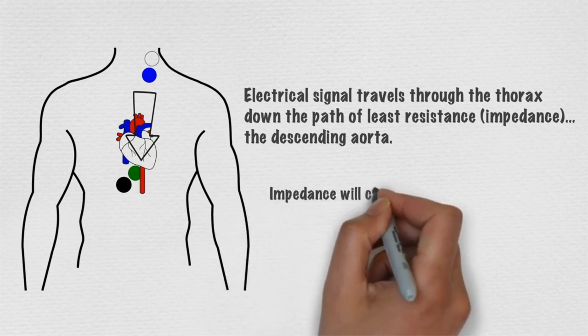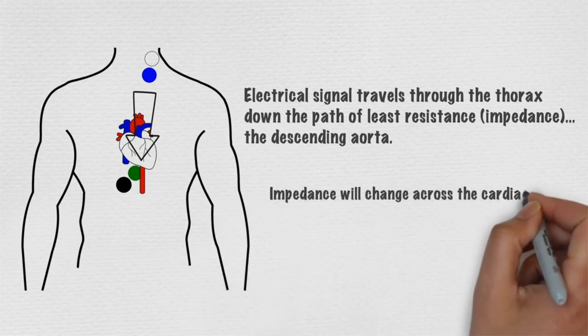The impedance to the signal will change across the cardiac cycle as blood travels down the aorta.